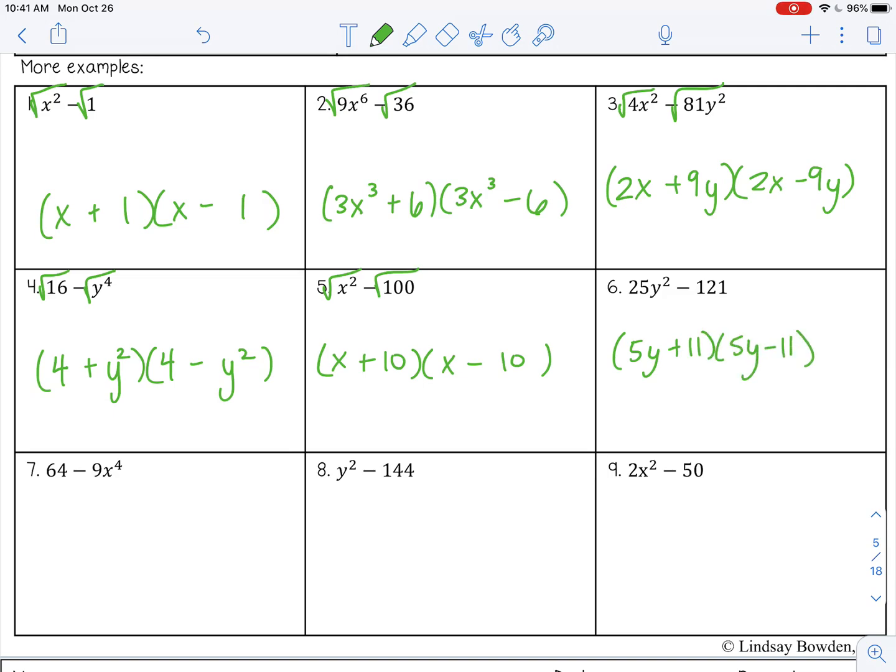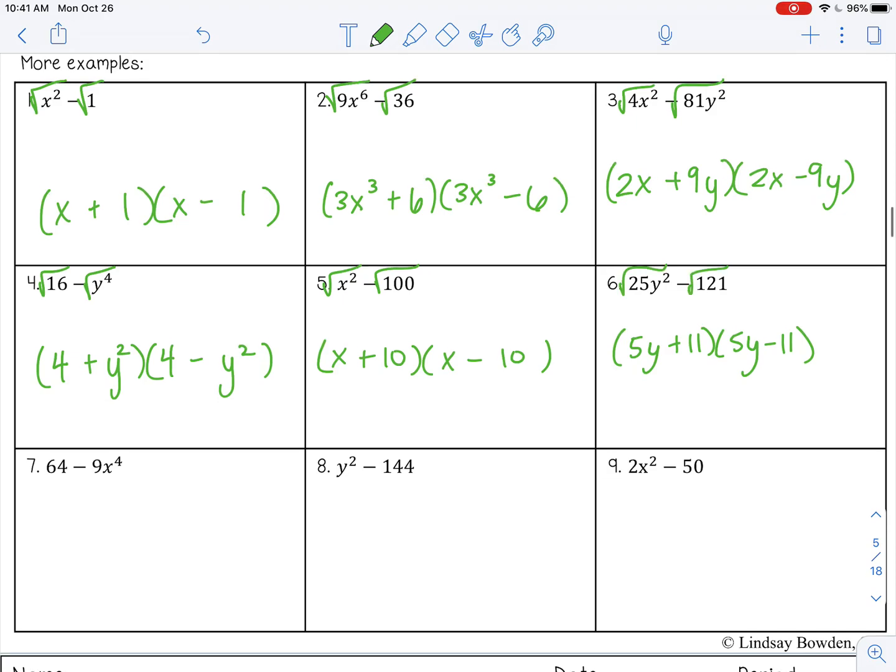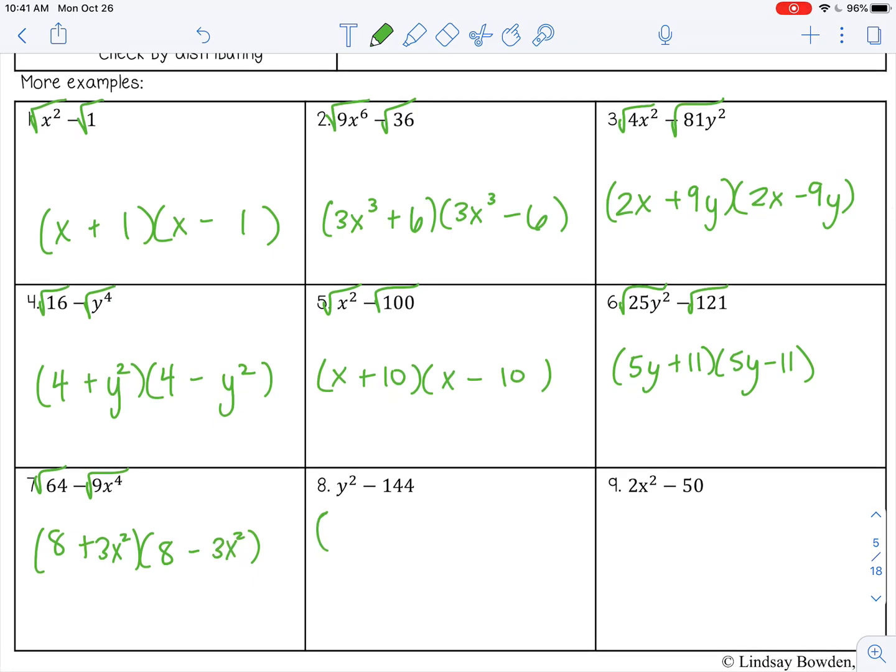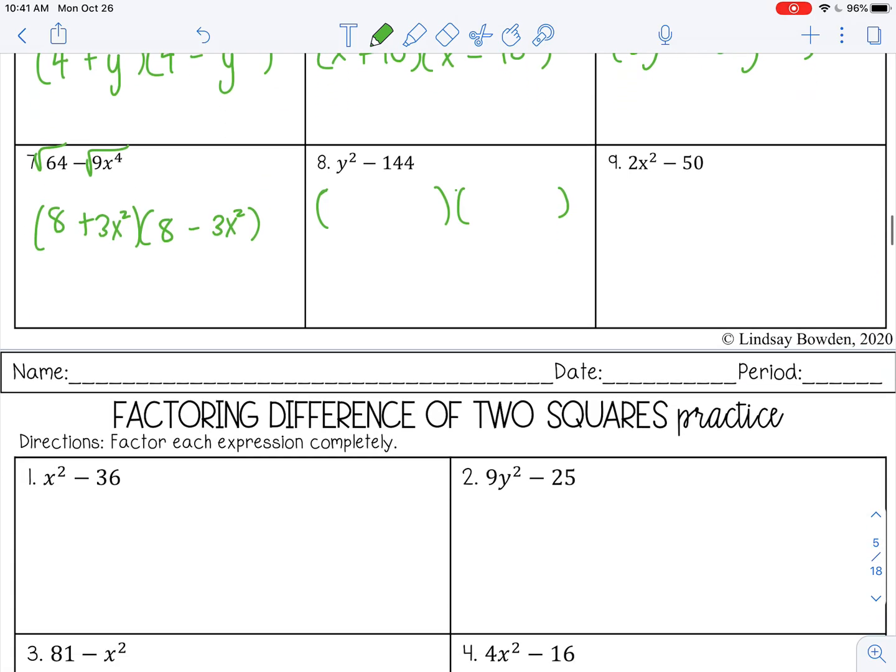There's number 6, 5y and 11. That's 8, that would be 3x squared. Scroll up here. This would be y plus 12, y minus 12.